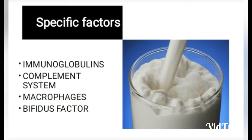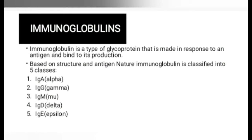Now, more information on immunoglobulins. Immunoglobulin is a type of glycoprotein that is made in response to an antigen and binds to it. Based on structure and antigen nature, immunoglobulins are classified into five classes: immunoglobulin A (alpha), immunoglobulin G (gamma), immunoglobulin M (mu), immunoglobulin D (delta), and immunoglobulin E (epsilon).